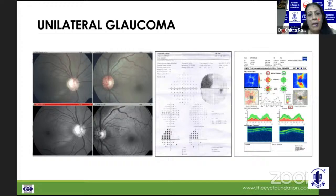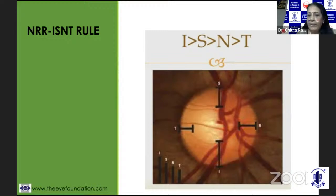The ISNT rule is important: the inferior rim is thicker, followed by the superior, then the temporal and nasal. If this relationship is altered — if the inferior becomes thinner than the superior — our antennas have to be up. We need to look for notches, thinning, loss of rim, or erosion.